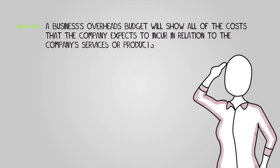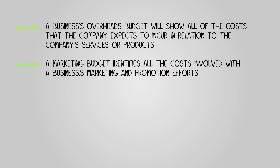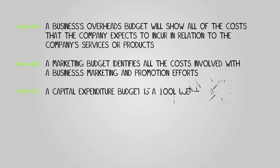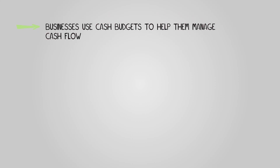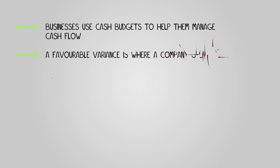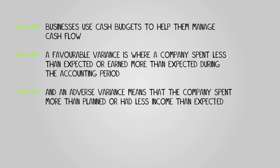In conclusion: a business's overheads budget will show all of the costs that the company expects to incur in relation to its services or products, excluding direct labor and materials. A marketing budget identifies all the costs involved with the business's marketing and promotion efforts. A capital expenditure budget is a tool used by companies to plan and calculate capital expenses for a specific accounting period. Businesses use cash budgets to help them manage cash flow. A favorable variance is where a company spent less or earned more than expected, and an adverse or unfavorable variance means the company spent more than planned or had less income than expected.